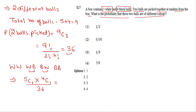Let's calculate this: 5 factorial over 1 factorial times 4 factorial, and 4 factorial over 1 factorial times 3 factorial. Since nC1 equals n, this becomes 5 times 4 divided by 36.